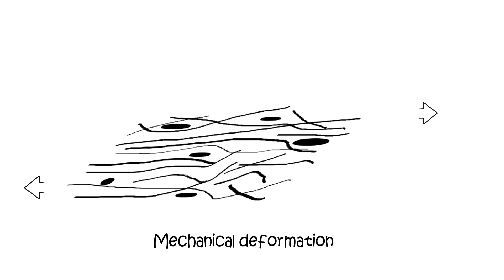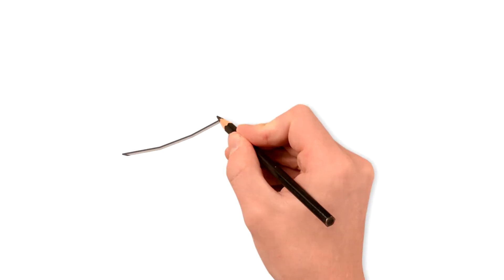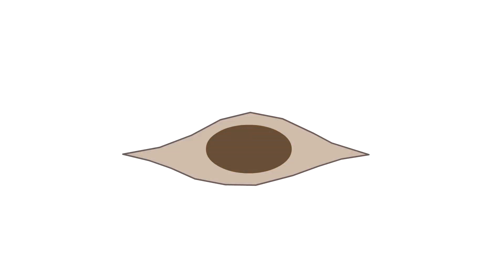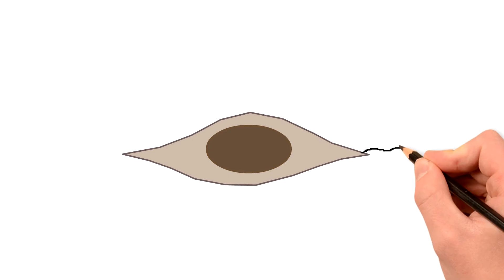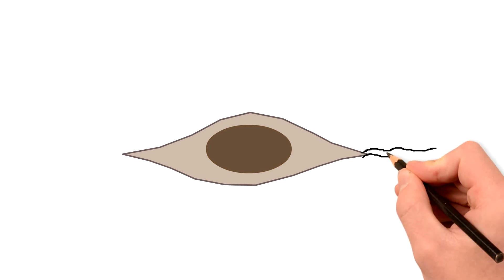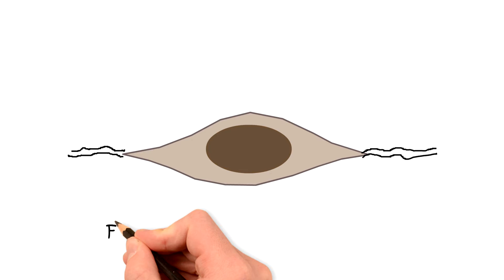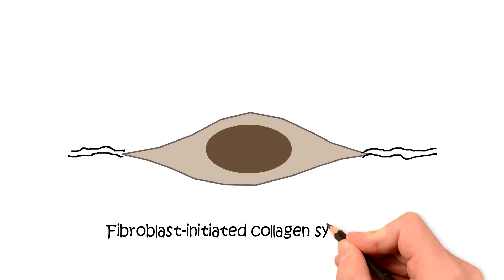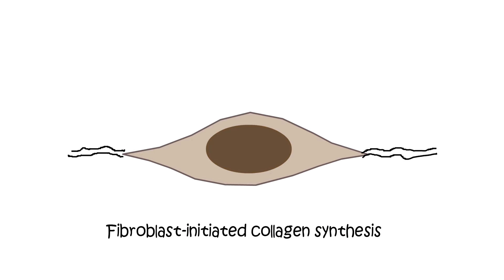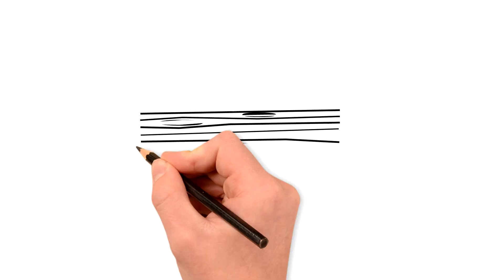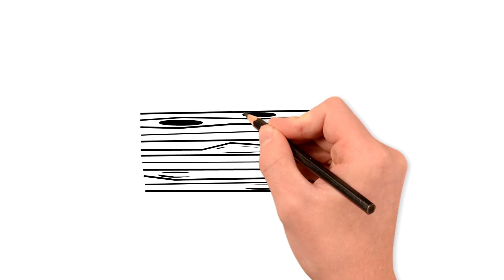Cellular mediated repair and regeneration of connective tissue is fairly complicated, but for the sake of simplicity, mechanical deformation of the connective tissue fibroblast results in activation of the cell, leading to the production of healthy collagen that is used to remodel the connective tissue so that it transforms from a poorly organized pain-producing tissue into a more organized, more activity-tolerant tissue.